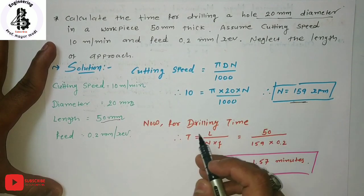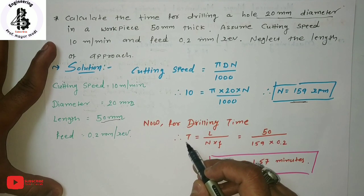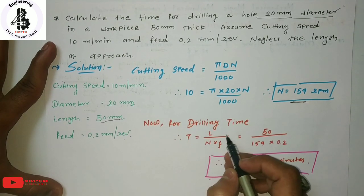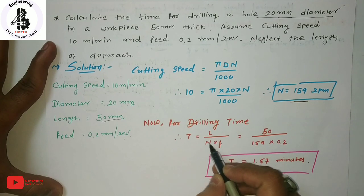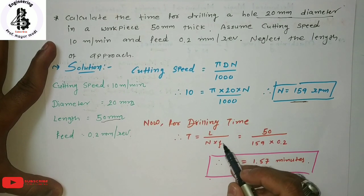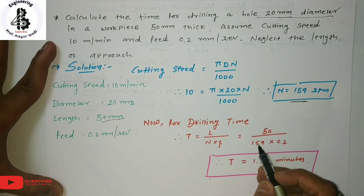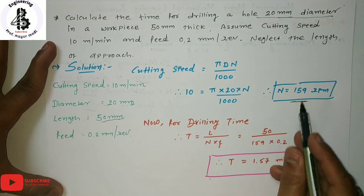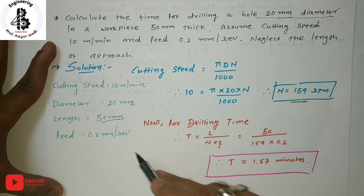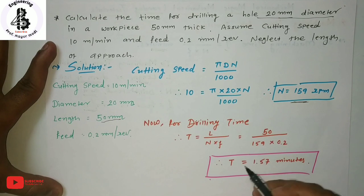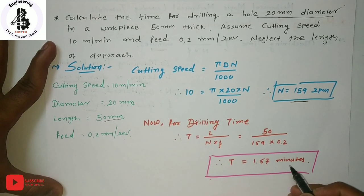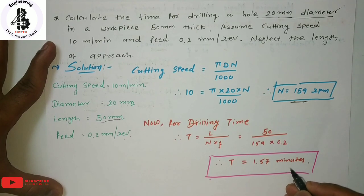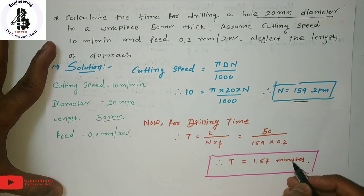Now applying the machining time formula: T equals L divided by N into f. Substituting the value of length, the calculated RPM, and the feed of 0.2 mm per revolution from the given data, we find T equals 1.57 minutes.